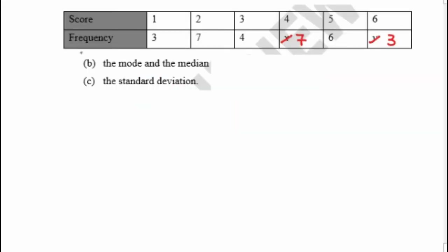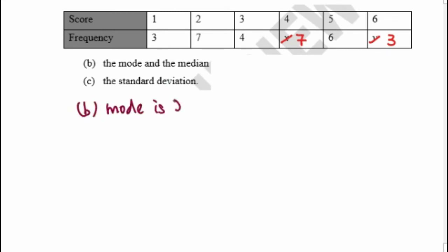Next we find the mode and median. For the mode, it is the value with the highest frequency. The highest frequency here is 7, so our mode equals 2.